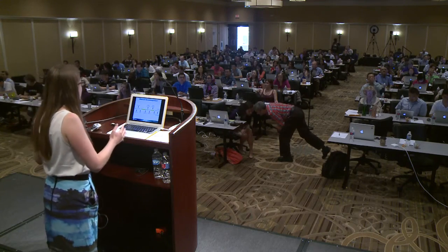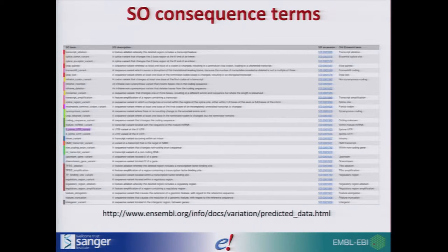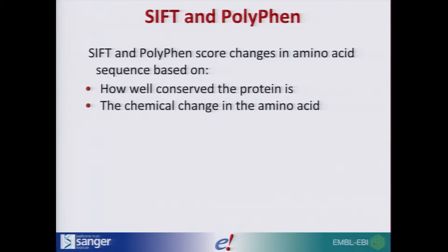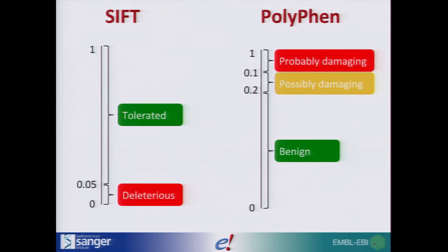We've got our gene model with different kinds of consequences, where our variants might be falling. In Ensembl, we use sequence ontology consequence terms — a standardized vocabulary of consequences that might result from your variants. You might also be interested in SIFT and PolyPhen scores, which are scores for changes in amino acid sequence based on how well conserved the protein is and the chemical change in the amino acid.